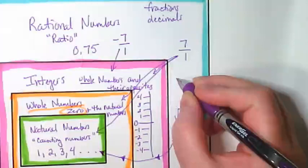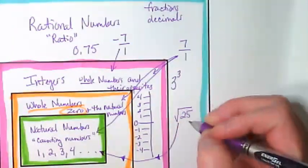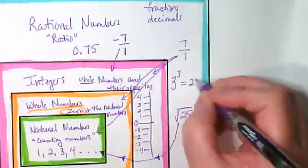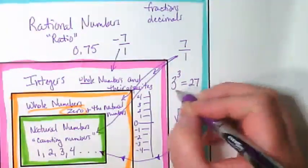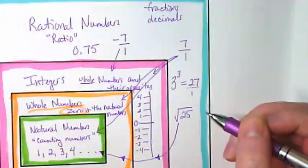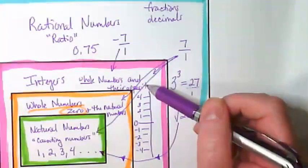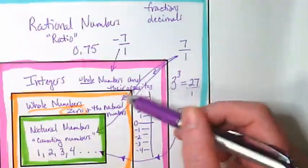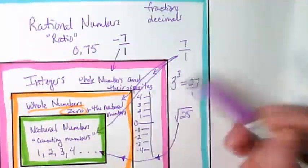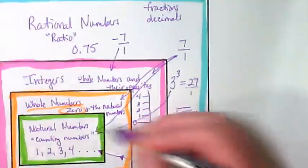We can even have things with exponents in here. 3 to the power of 3 is equal to 27. 27 is over an invisible one, so it's rational. 27 is also a whole number, so it's an integer and a whole number and a natural number. So this would also be with all three others.